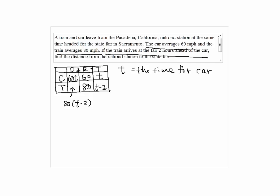Now, notice that the train and car traveled exactly the same distance, so their distances should be equal. So 60T equals 80 times T minus two. This will be our equation.